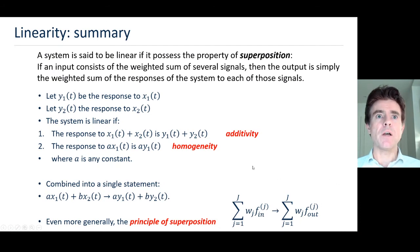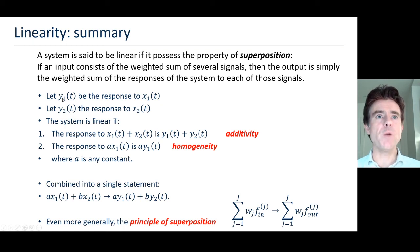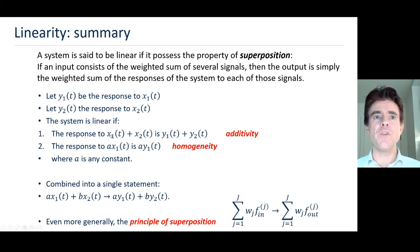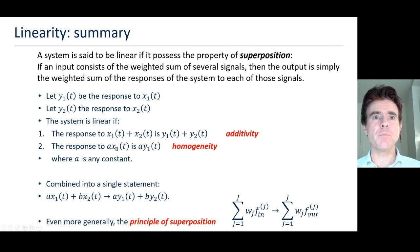This summary slide covers what we've discussed: the principle of superposition, now expressed with continuous time functions. If y1(t) is the response to x1(t) and y2(t) is the response to x2(t), then for a linear system, putting in x1(t) plus x2(t) gives an output y1(t) plus y2(t) — this is the additivity property. If we scale some input x1 by a constant a, then the output is the same scaling factor a applied to y1. So ax1 goes to ay1 — and that's homogeneity, where a is any constant.